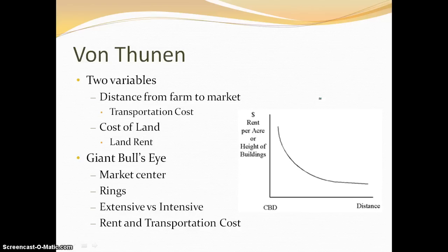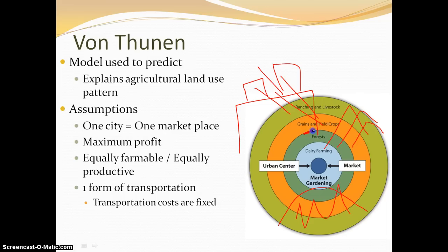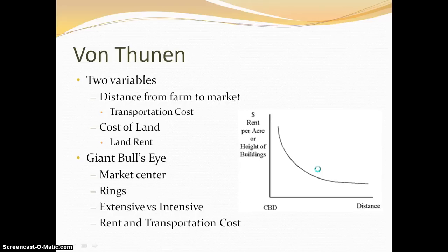Von Thunen really only considers two variables: the distance from the farm to the market, which is going to increase transportation costs, and the cost of land — what we call land rent. There's a correlation that the more land the farmer needs, he's going to need cheaper land. But he doesn't want to be so far out that his transportation costs increase exponentially. That's why you end up getting these rings, because once you've moved to a certain point, it's no longer profitable. This brings us to what's called the bid-rent curve.